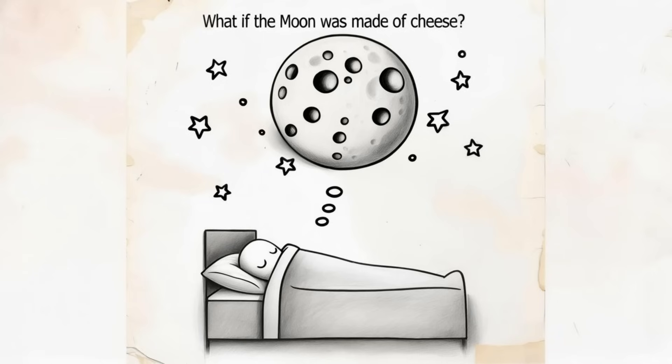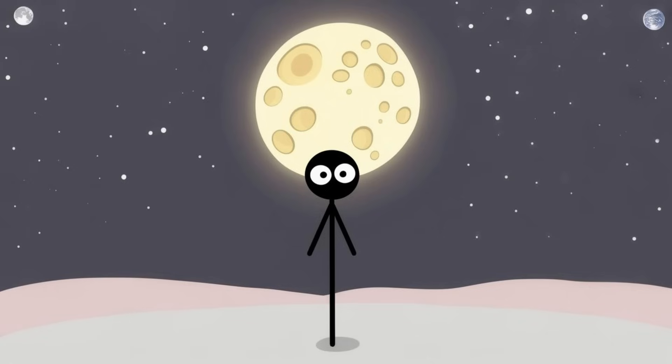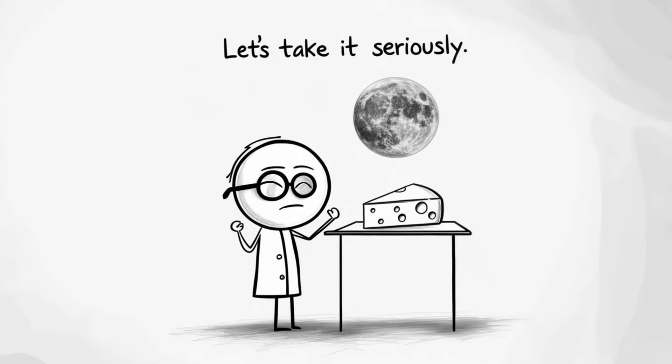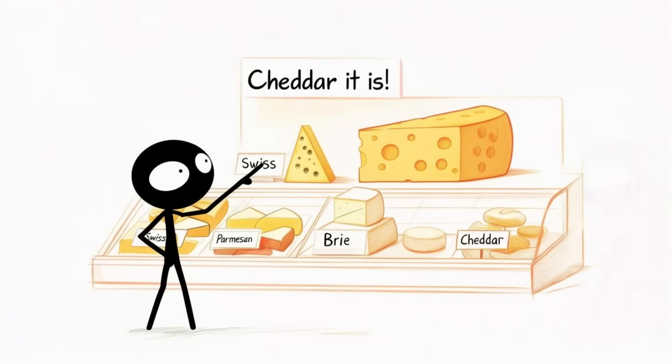What if the moon was made of cheese? This is one of those questions that sounds like it came straight from a dream, a bedtime story, or possibly a very strange snack commercial. What if the moon, yes, that glowing orb in the night sky, wasn't a giant rock, but instead a giant hunk of cheese? Let's ignore for a moment how utterly bizarre that is and take it seriously. Because why not? Science is about curiosity, and few things are more curious than a 7.35 quintillion ton ball of cheddar orbiting our planet.